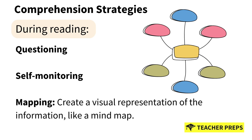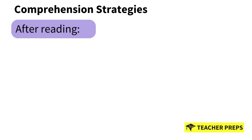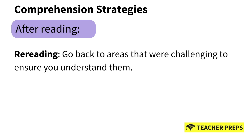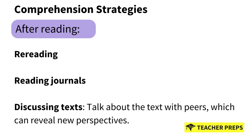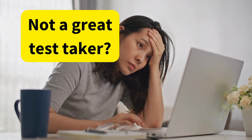After reading strategies include rereading, where students go back to areas that felt challenging to ensure full understanding. Next is using reading journals, where students reflect on what they've read by noting down summaries, questions, and insights. Lastly, there is discussing texts — talking about the text with a partner, peer, or friend, which can help reveal new perspectives.